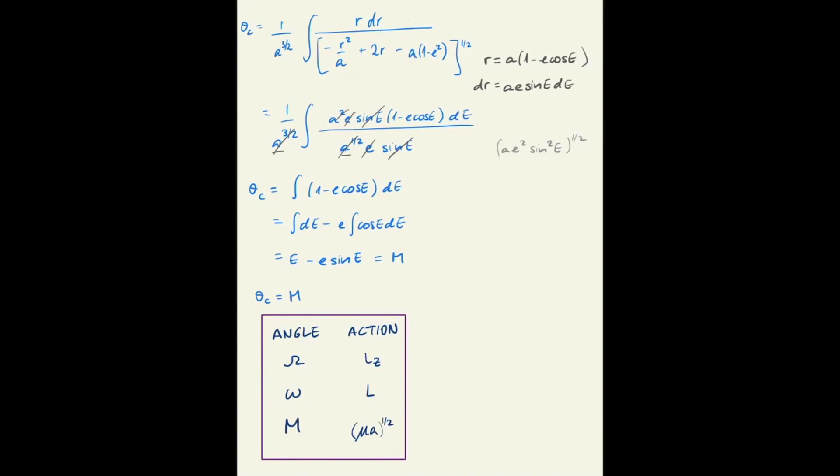We can also write the angular momentum in terms of the orbital elements. The angular momentum is the square root of mu a times one minus e squared, and the angular momentum z is the same quantity but multiplied by the cosine of the inclination.